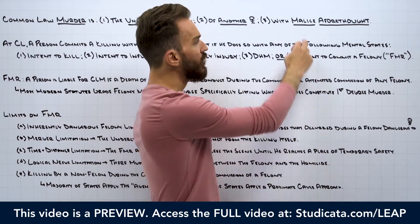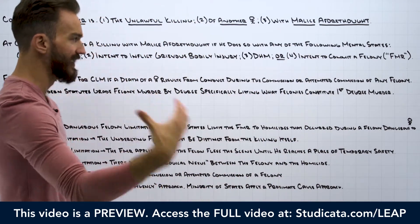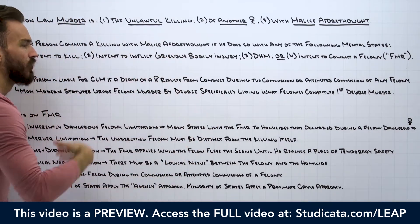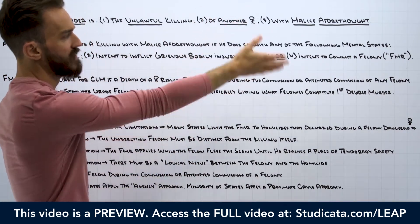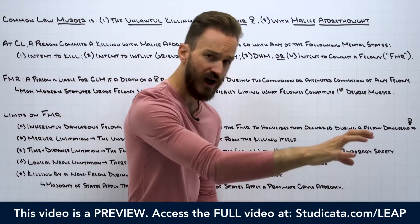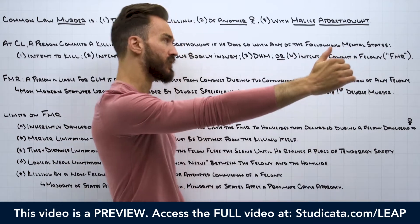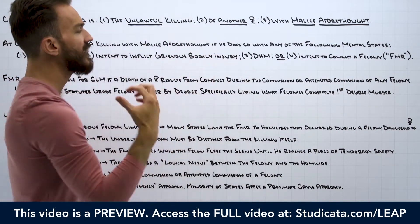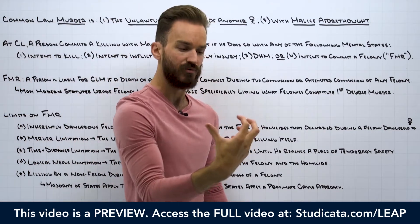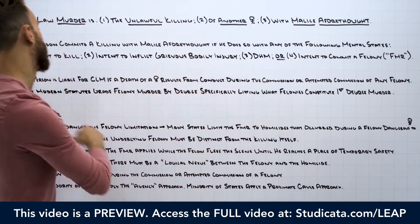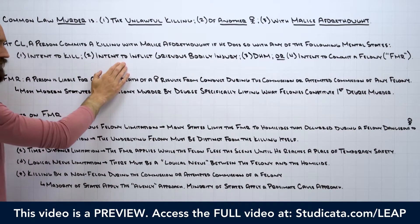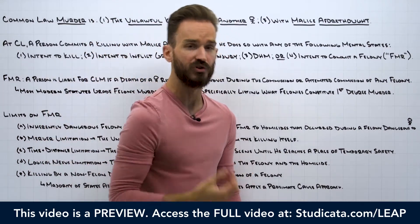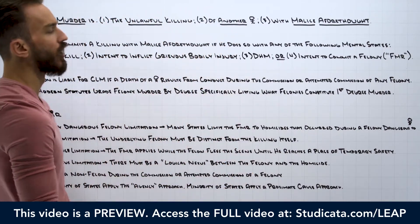In our last lesson, we broke down in a lot of detail what malice aforethought is. It really comes down to committing a killing with a specific mental state — that's how we get to malice aforethought and ultimately to common law murder. We talked about the first three ways to get to that mental state: the intent to kill, the intent to inflict grievous bodily injury, and reckless indifference to an unjustifiably high risk to human life, which we called depraved heart murder.